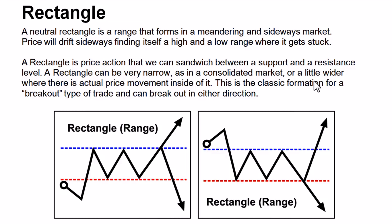A rectangle is a range that forms in a meandering and sideways market. The price drifts sideways — like a drifting sports car that drifts in a range along a railroad track, forming highs and lows. The price in the market drifts, finding a high and a low where it gets stuck, forming the same high and the same low in a ranging pattern without pushing out from that zone. A rectangle is a price action sandwiched between a support and resistance level.